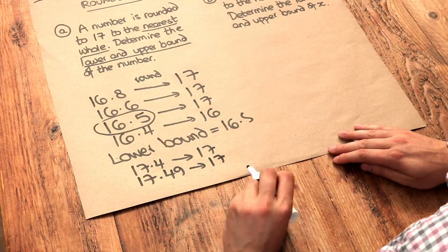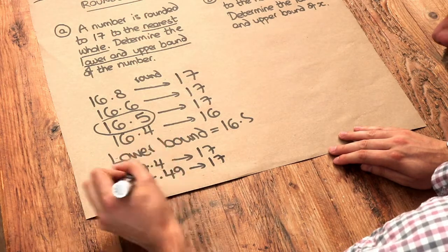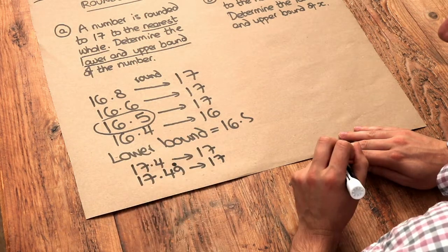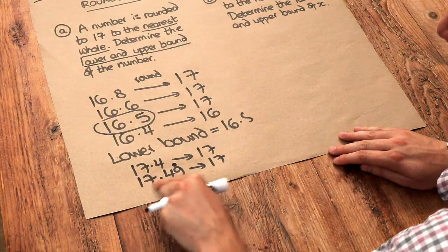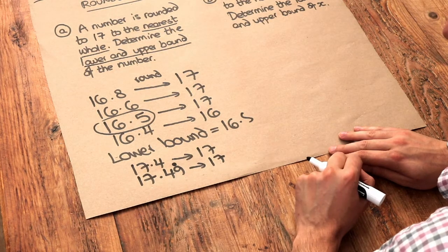And in fact, we can keep on adding more nines on the end. So it's in fact, 17.49 recurring would be the highest number we could have that still rounds to 17.